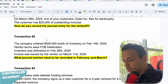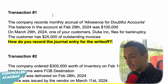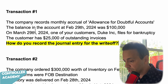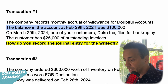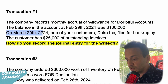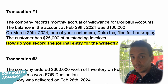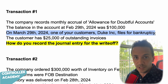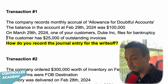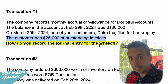We have four transactions. Let's go through transaction number one. The company records a monthly accrual for allowance of doubtful accounts. The balance as of February 29th, 2024 was $100,000. On March 29th, 2024, one of your customers, Duke Inc., files for bankruptcy. We have to write off whatever they owe us because there's a likelihood they're not going to pay. The customer has $25,000 of outstanding invoices. How do you record the journal entry for the write-off of the accounts receivable?